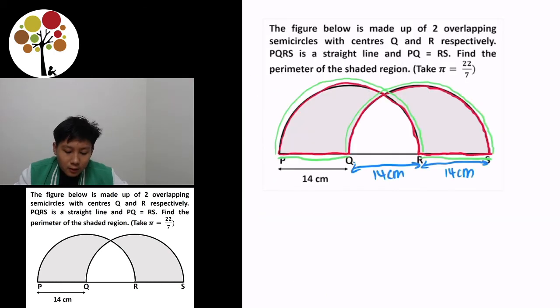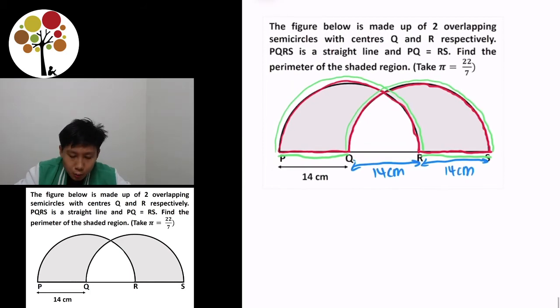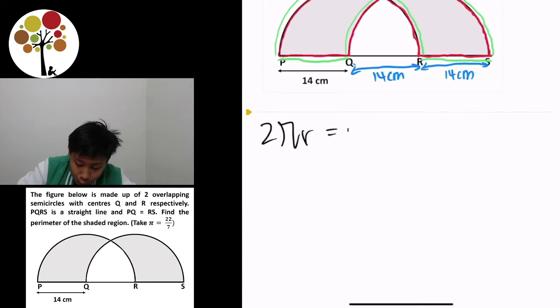So the formula to find the perimeter of a circle is equal to 2πr or πd. So 2πr is equal to 2 times 22 over 7, which the question says to take π as 22 over 7. And the radius, as you can see from the graph, is 14 cm.